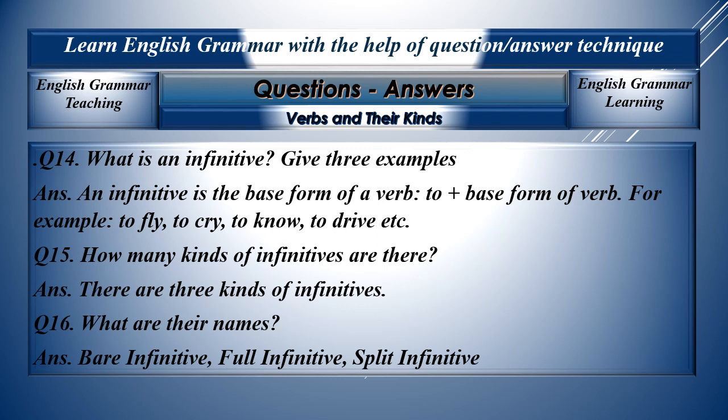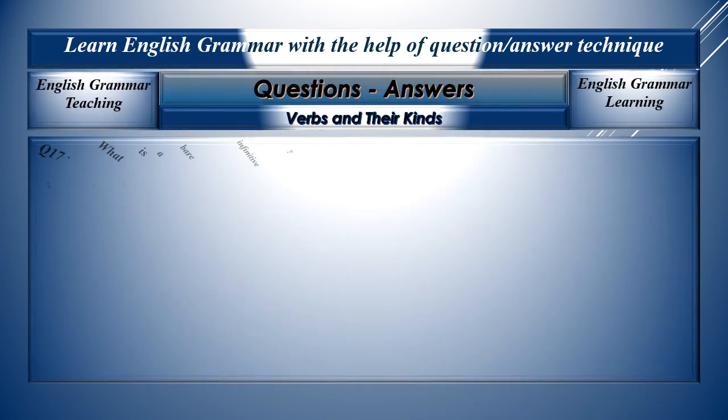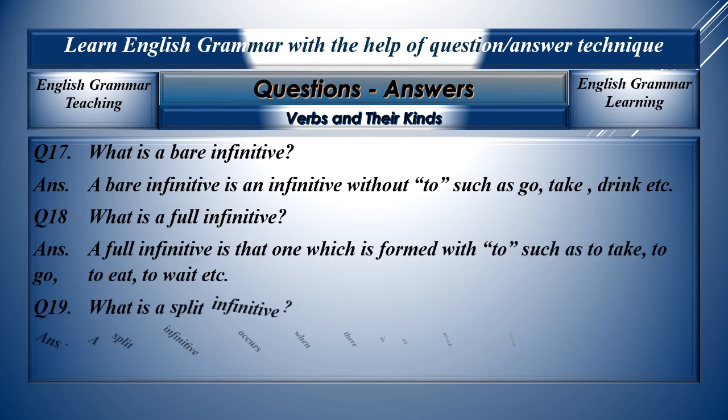Question number fourteen: What is an infinitive? Give three examples. An infinitive is the base form of a verb — 'to' plus the base form of the verb. For example: to fly, to cry, to know, to drive, etc. Question fifteen: How many kinds of infinitives are there? There are three kinds of infinitives. Question sixteen: What are their names? They are bare infinitives, full infinitives, and split infinitives.